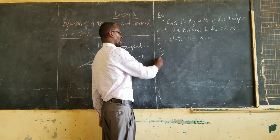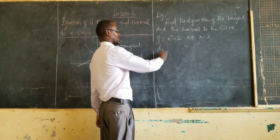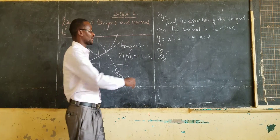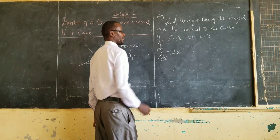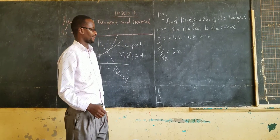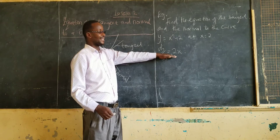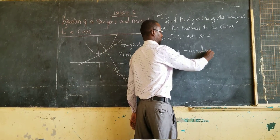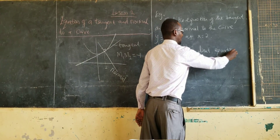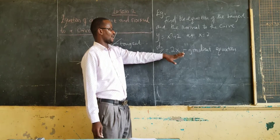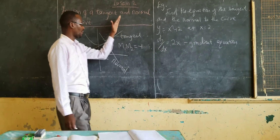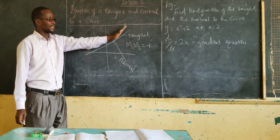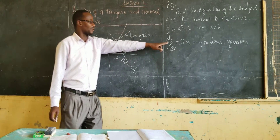So, let's get dy/dx. If we differentiate this, using the rule that we went through in the previous lesson, dy/dx will be equal to 2x. This is the gradient function — it is the equation that will give you the gradient for that curve, so at any point on this curve the gradient equation is 2x.